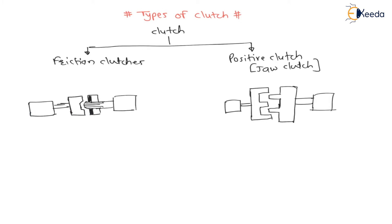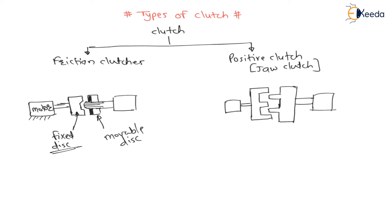Here there is a motor which generates power. From the motor, power is transmitted to the clutch. The first disc is a fixed disc, and there is another disc which is the movable disc. On the movable disc, you can see there are friction linings — shown here in red color. These are friction linings, also called friction material.